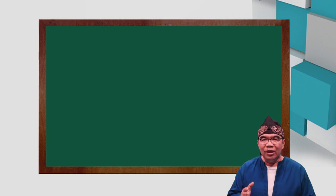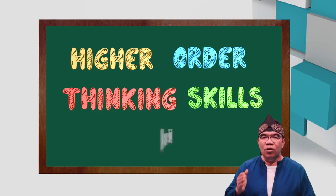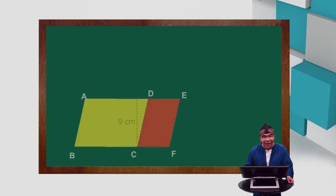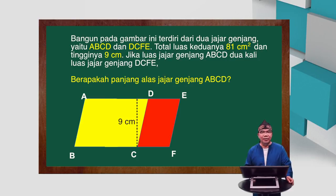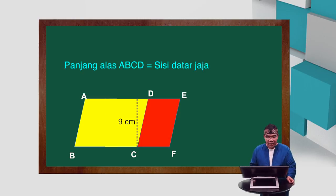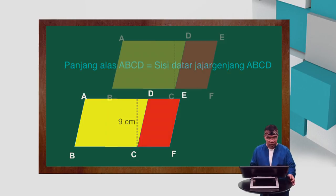Sekarang kita akan membahas jajar genjang menggunakan soal HOTS, atau higher order thinking skill, yaitu soal yang beraras tinggi. Soal: Bangun pada gambar di bawah ini terdiri dari 2 jajar genjang, yaitu ABCD dan DCFE. Total luas keduanya 81 cm persegi dan tingginya 9 cm. Jika luas jajar genjang ABCD adalah 2 kali luas jajar genjang DCFE, berapakah panjang alas jajar genjang ABCD? Yang dimaksud panjang alas ABCD adalah sisi datar dari jajar genjang ABCD.